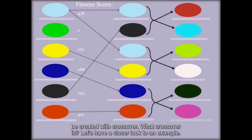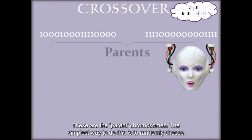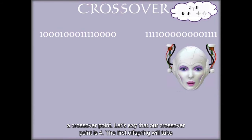What crossover is? Let's have a closer look to an example. These are the parent chromosomes. The simplest way to do this is to randomly choose a crossover point. Let's say that our crossover point is 4.